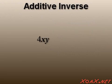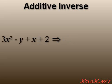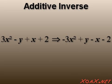Given a monomial term like 4xy, the additive inverse is -4xy. For a general polynomial like 3x²-y+x+2, we get the additive inverse by multiplying by -1 or negating each monomial. So in this case, the additive inverse is -3x²+y-x-2.